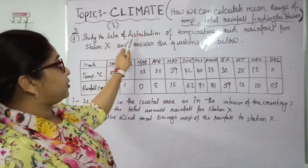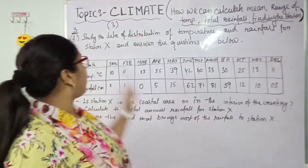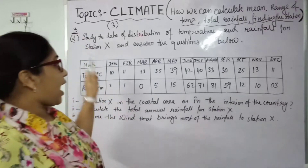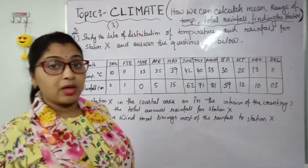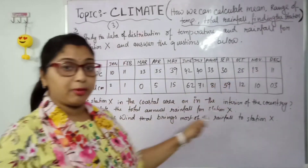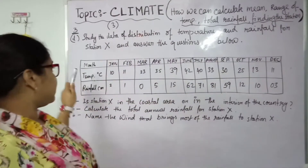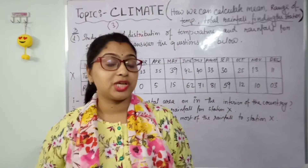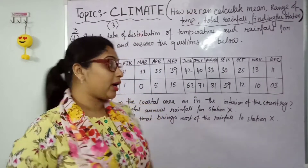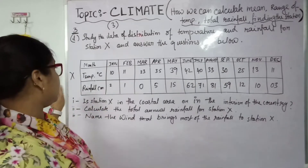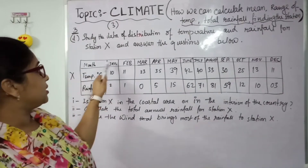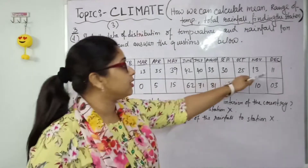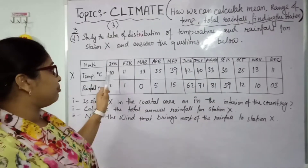Here, the question says: study the data of distribution of temperature and rainfall for station X — the station can be given any name, such as A, B, C, or D — and answer the questions below. A table will be given in your exam. Sometimes one station is given, sometimes two or three stations. Here in the table, station X shows data from January to December, with mean temperature in degree centigrade and rainfall in centimeters for each month.